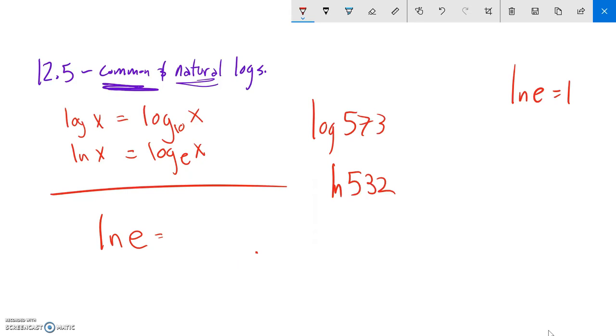Because natural log and e to that undo each other. Similarly, if I asked natural log of e to the fifth, this is asking e to what power gives me e to the fifth. It must be five. E to some power of ln gives me that power back.